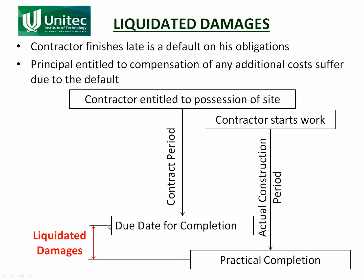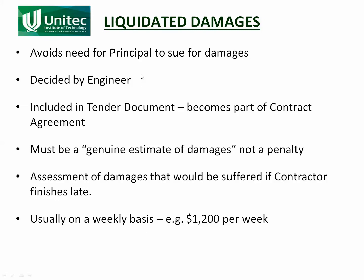The total amount of liquidated damages is the agreed rate multiplied by the time — which is the difference between the due date for completion and when the practical completion certificate was actually issued. Liquidated damages avoids the need for the principal to sue for damages. Those costs — insurances, keeping the engineer on — are what is known as damages. Liquidated damages simply means readily available damages: you don't have to go to court to sue for it. It is a right given to the principal as part of the contract agreement.